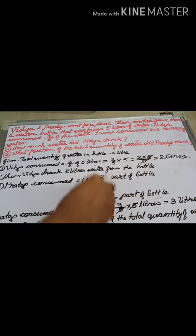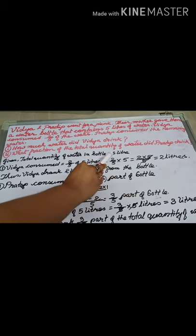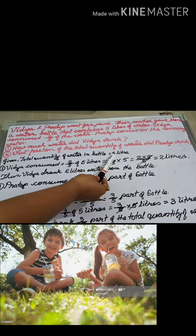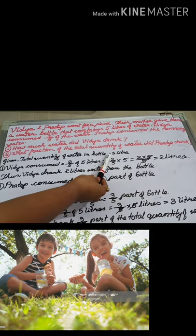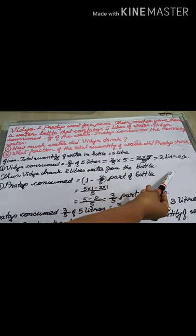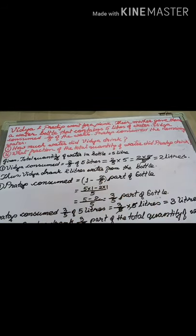You can find out the remaining amount easily. Total water is 5 litres; Vidya consumed 2 litres. How much is left? Yes, 3 litres only are left, and those 3 litres are what Pradeep consumed.